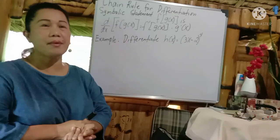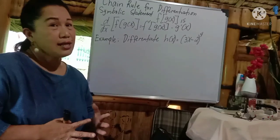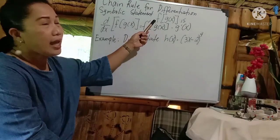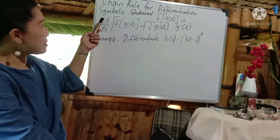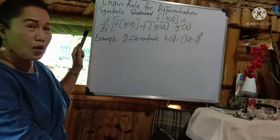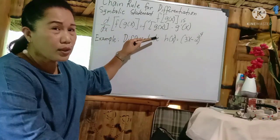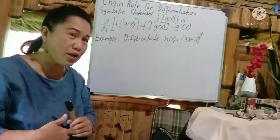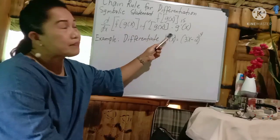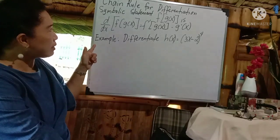I have here on the board the chain rule for differentiation. The symbolic statement is: given f of g of x, if you get the derivative using the chain rule, that is written as d over dx of f of g of x, which equals f prime of g of x times g prime of x. The prime notation here means the derivative.